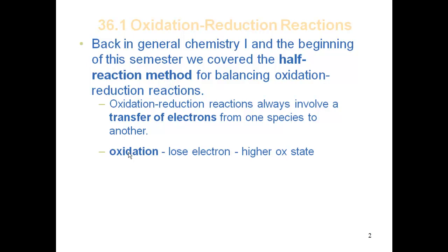Oxidation, by definition, is something that loses electrons — it goes to a higher oxidation state. For example, iron 2+ goes to iron 3+; it went from a lower oxidation state to a higher one. In the process, it gives up an electron. So any time we're talking about oxidation, it will be producing electrons — they will be on the product side.